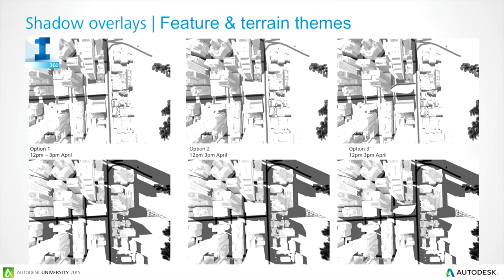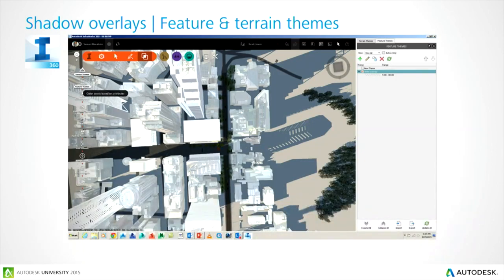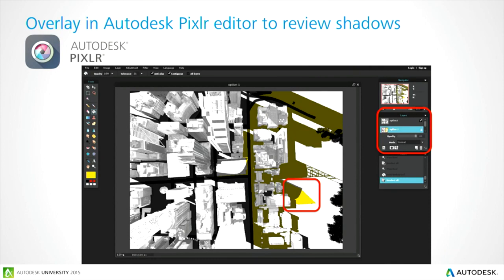Autodesk Pixlr is a free web-based application that does much the same as a basic version of Photoshop. Set up feature and terrain themes to make shadows really strong in your design options — for example between 12 and 3pm in April. Add a white overlay theme to give clearer shadow definition without re-texturizing models. In Pixlr, bring in the two different tower options and add a multiply channel — you can then clearly see the two different tower options and what shadows they cast at certain times of year, communicating the impact to concerned stakeholders.